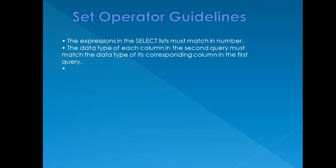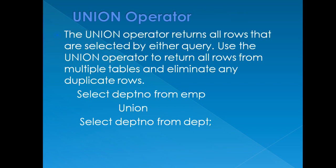Now let's see how to work on it. The first operator is the UNION operator. UNION returns all rows that are selected by either query. Use the UNION operator to return all rows from multiple tables and eliminate any duplicate rows. So when using the UNION operator, if both tables have any duplicate values, they will be eliminated — it will only return distinct, unique values.